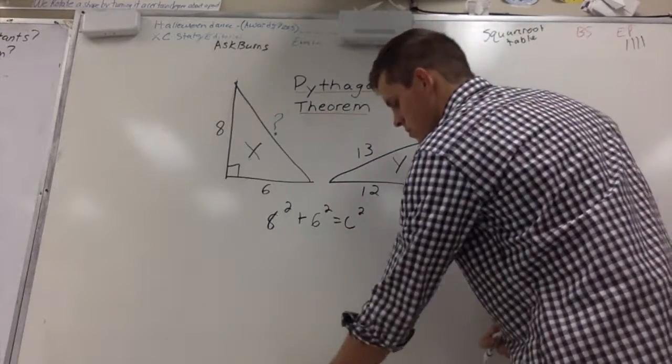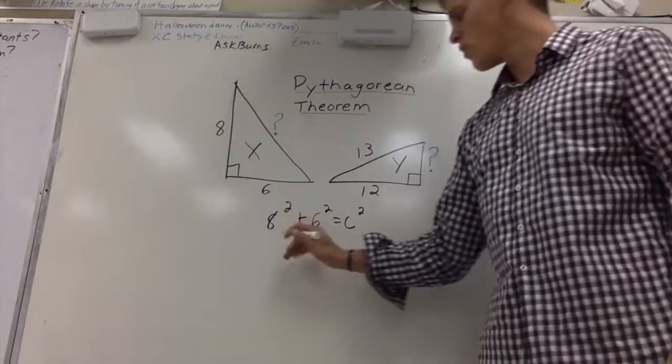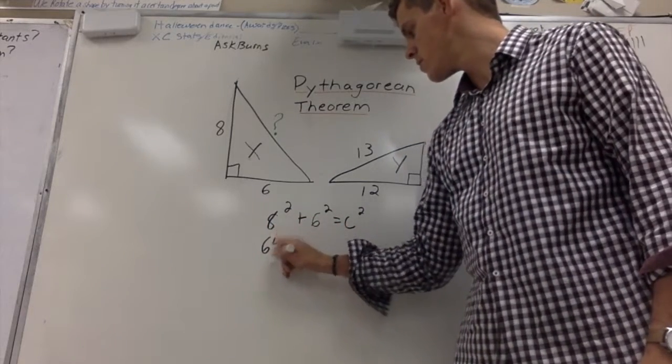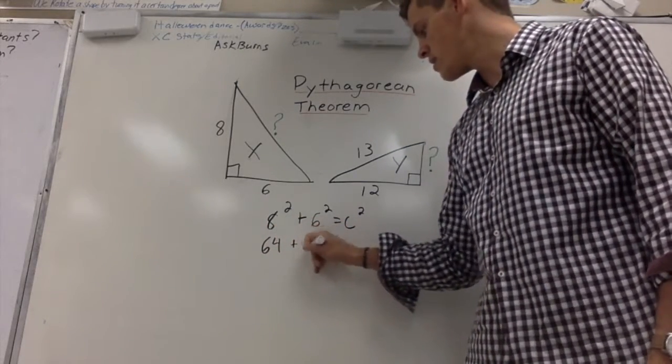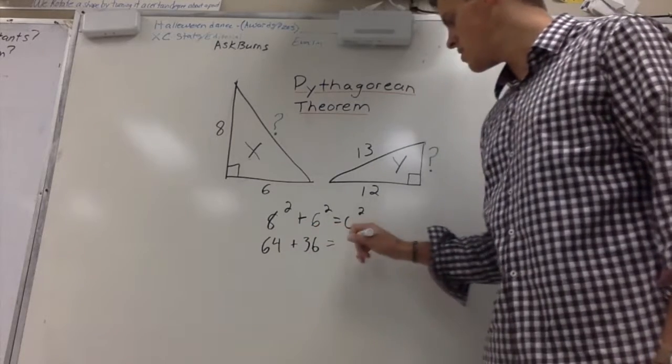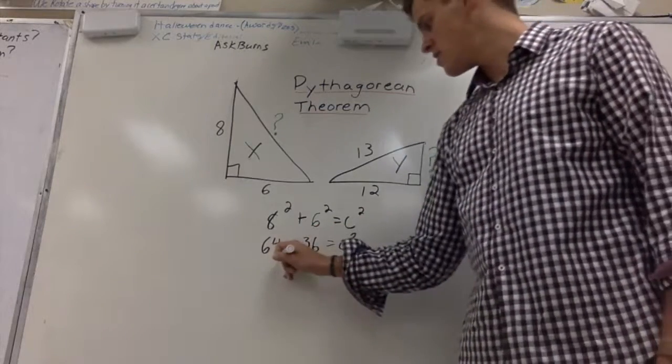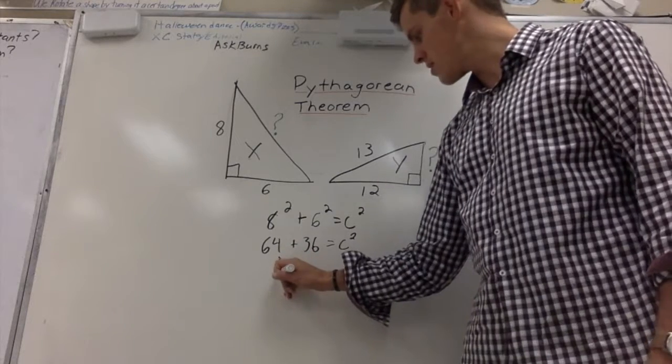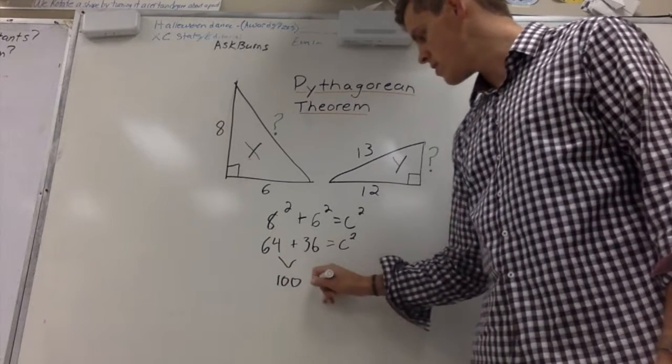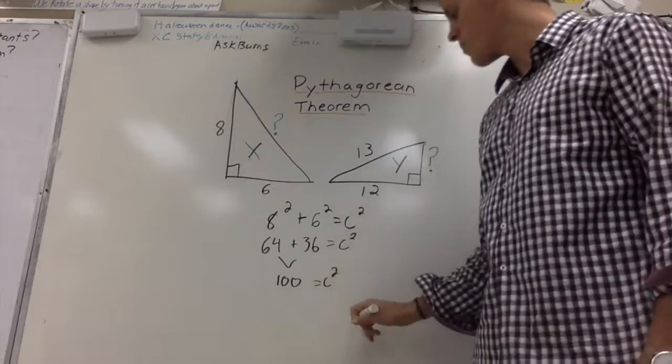From here, 8 squared is 64, 6 squared is 36, C squared, we're going to keep that the way that it is, 64 plus 36 is going to be 100, equals C squared.